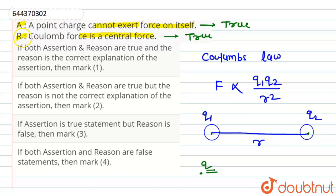That is, both assertion and reason are true, but reason is not the correct explanation for assertion. Therefore, option B, that is option number two, will be the correct answer. Thank you.